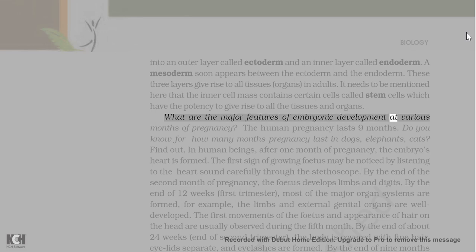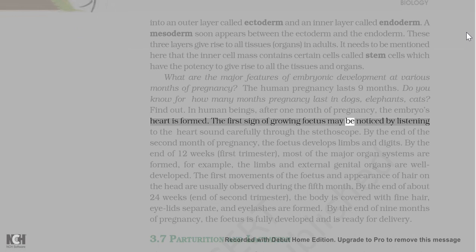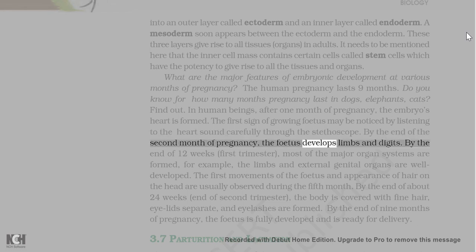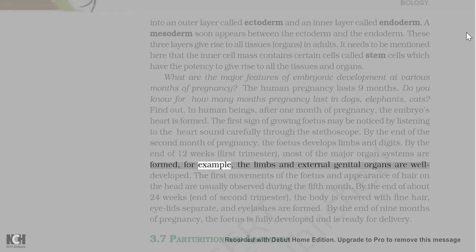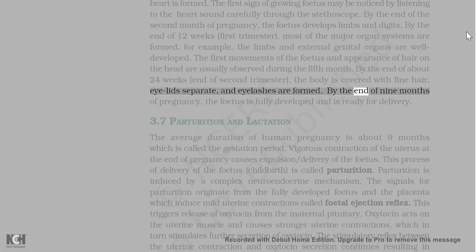The human pregnancy lasts 9 months. In human beings, after one month of pregnancy, the embryo's heart is formed. By the end of the second month, the foetus develops limbs and digits. By the end of 12 weeks (first trimester), most of the major organ systems are formed; for example, the limbs and external genital organs are well developed. The first movements of the foetus and appearance of hair on the head are usually observed during the fifth month. By the end of about 24 weeks (end of second trimester), the body is covered with fine hair, eyelids separate, and eyelashes are formed. By the end of 9 months of pregnancy, the foetus is fully developed and is ready for delivery.